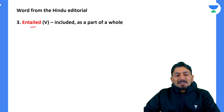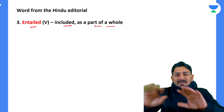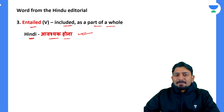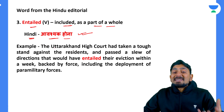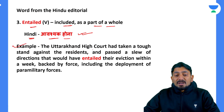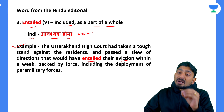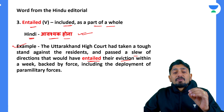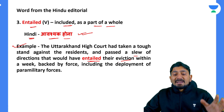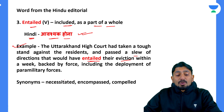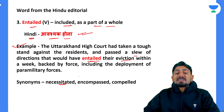The next word is 'entailed.' Entailed means something that is included as a necessary part of a whole. In Hindi, it means 'aavashyak hona' — something is necessary or required. The sentence was: 'The Uttarakhand High Court had taken a tough stand against the residents and passed a slew of directions that would have entailed their eviction within a week, backed by force, including the deployment of paramilitary forces.' It would have been necessary for the residents to move from that place. Synonyms: necessitated, compulsory, encompassed.